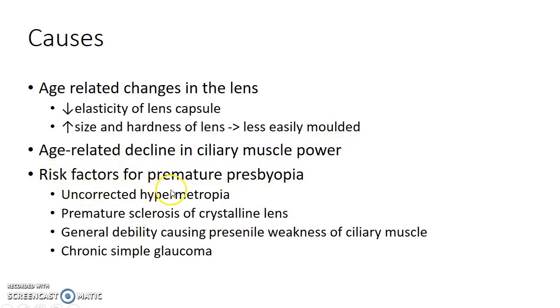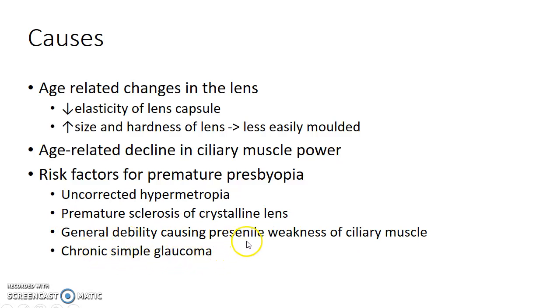What are the risk factors for premature presbyopia? Uncorrected hypermetropia, premature sclerosis of crystalline lens, general debility causing presenile weakness of ciliary muscle, and chronic simple glaucoma can lead to the development of presbyopia at an earlier age.